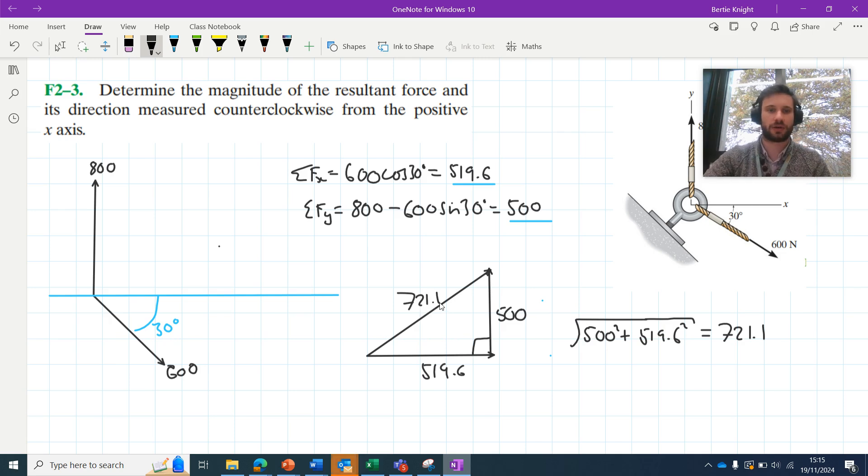So if we look back at the question here, it's saying determine the magnitude and its direction. We need to determine its direction counterclockwise from the positive axis. So that will just be equivalent to this angle here. Let's call it theta for now.